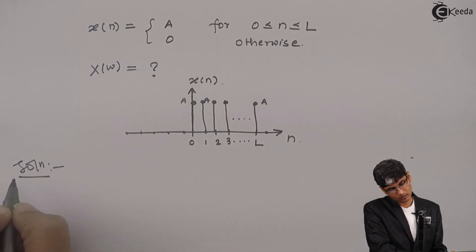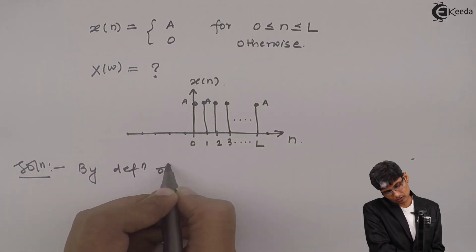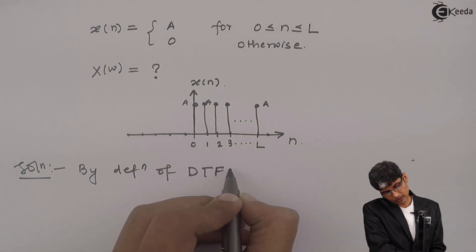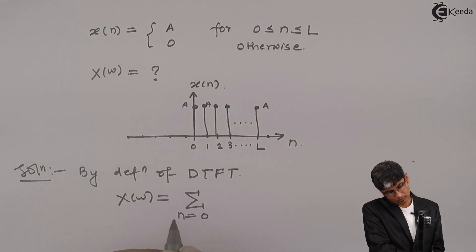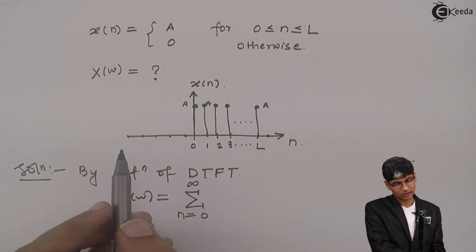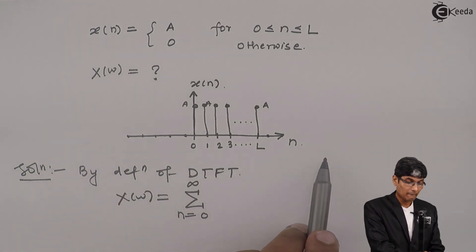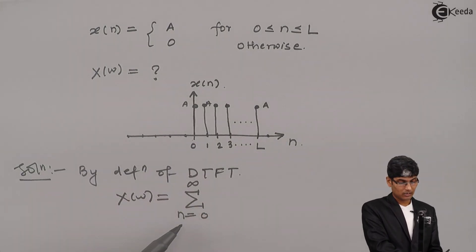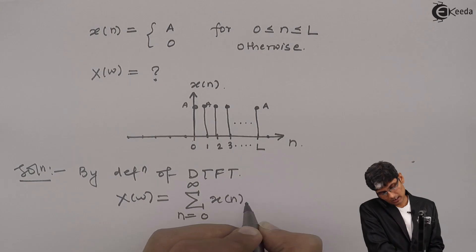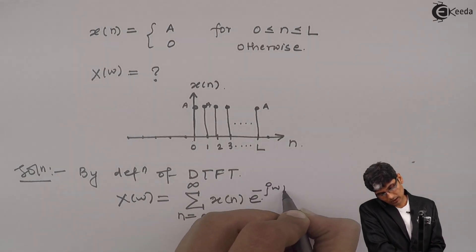The solution is by definition of DTFT: X(ω) = summation n goes from 0 to infinity. I can write minus infinity to plus infinity, but because the signal starts from 0 and below 0 everything is 0, it will be useless writing from minus infinity to 0. So I am writing directly from n = 0 to infinity: x(n)e^(-jωn).